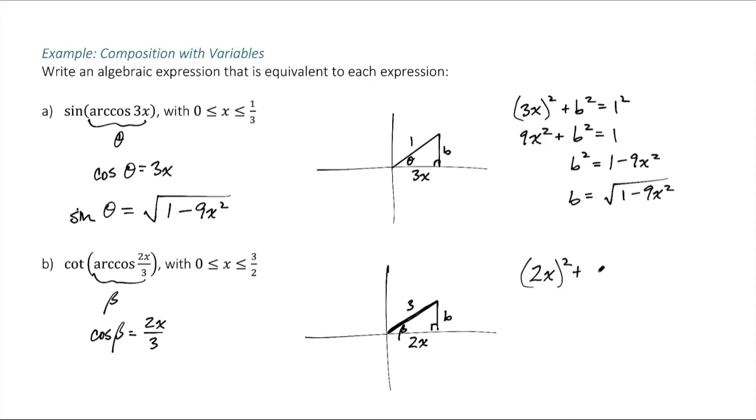2x squared plus b squared equals 3 squared. So this is 4x squared plus b squared equals 9. And then subtract the 4x squared. We get b squared equals 9 minus 4x squared.